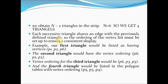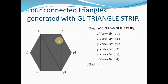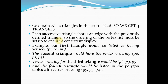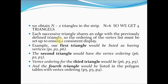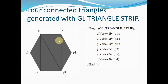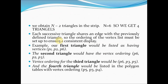The four triangles in the triangle strip are: first triangle p1, p2, p6; second triangle p6, p2, p3; third triangle p6, p3, p5; and the fourth triangle p5, p3, p4.